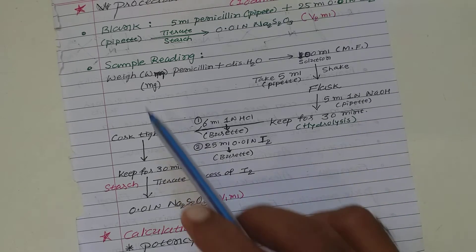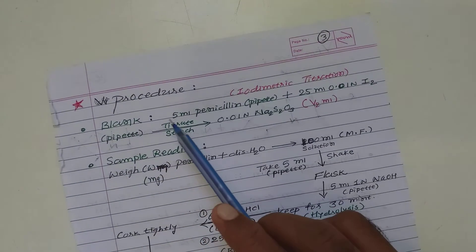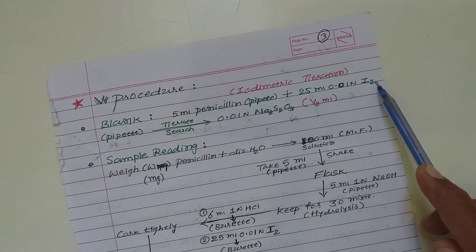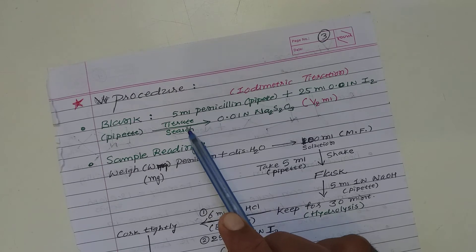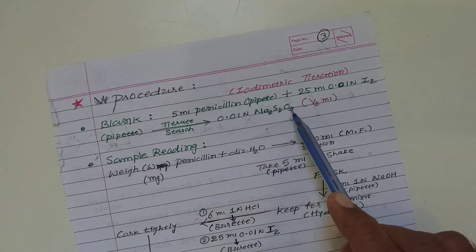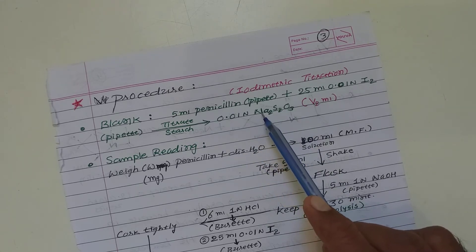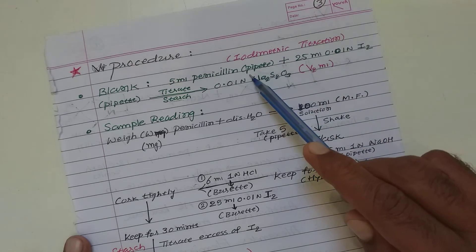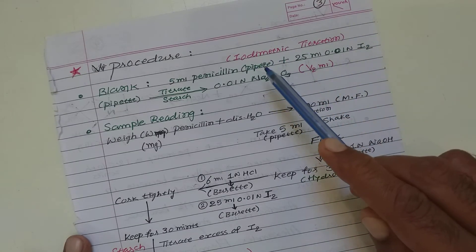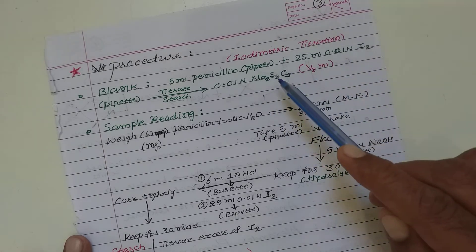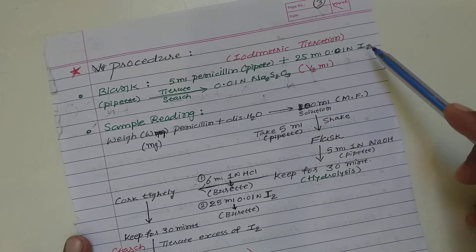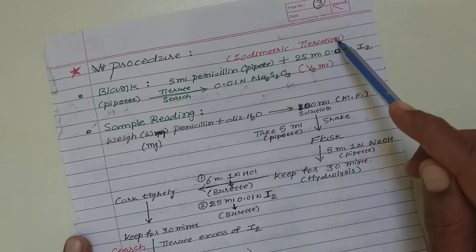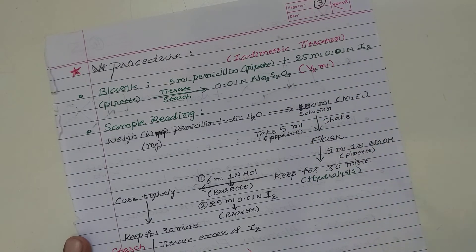During those 30 minutes, perform a blank titration. In blank titration, take 5 ml of penicillin solution, add 25 ml of 0.01 normal iodine solution, add starch indicator, and titrate against 0.01 normal sodium thiosulfate solution. Repeat this practical at least 2 to 3 times; the constant reading is called V₂ ml. This titration is called iodimetric titration because iodine is directly titrated against sodium thiosulfate. Direct titration of iodine is iodimetric titration; indirect titration of iodine is iodometric titration.